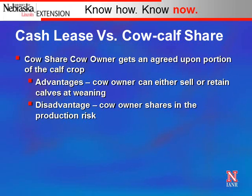In a cow-calf share arrangement, the cow owner gets an agreed upon portion of the calf crop. The advantage is they can either sell or retain calves at weaning, which might be particularly advantageous if there are genetics in the herd they want to retain and bring back into the herd. The disadvantage is that they're now participating in both production risk and price risk, so if production problems occur or a price wreck occurs they stand that risk.